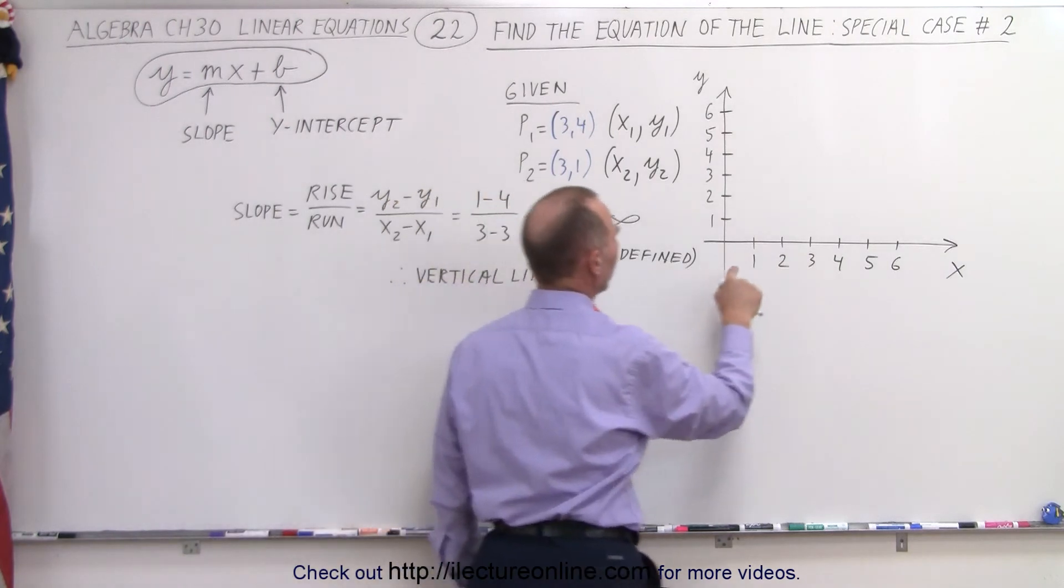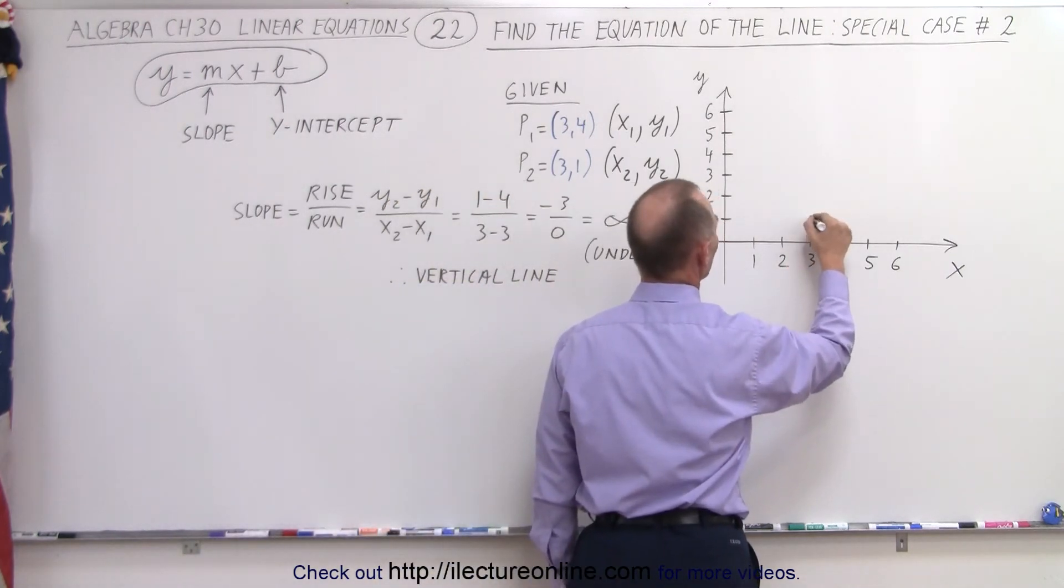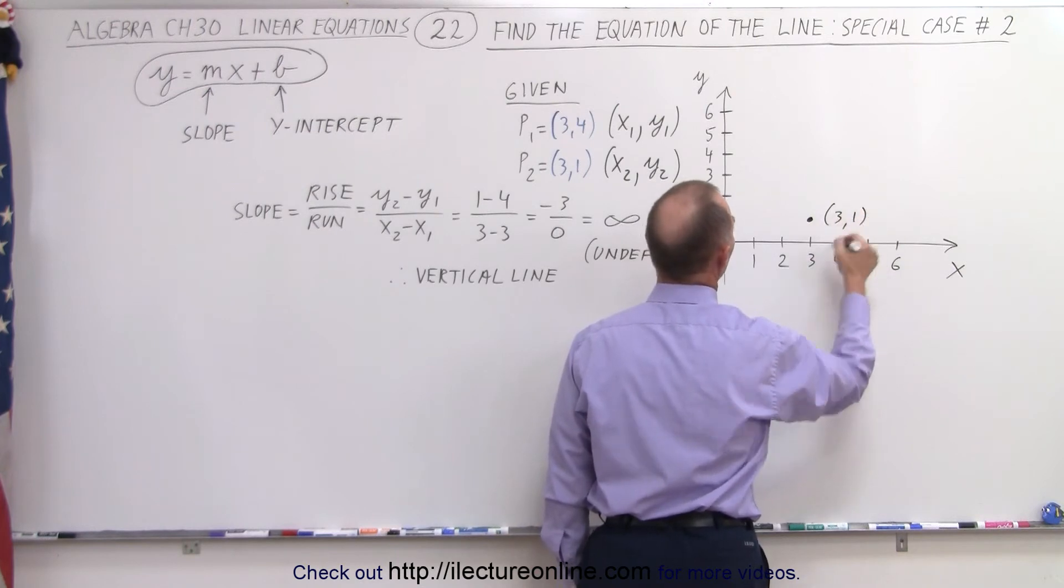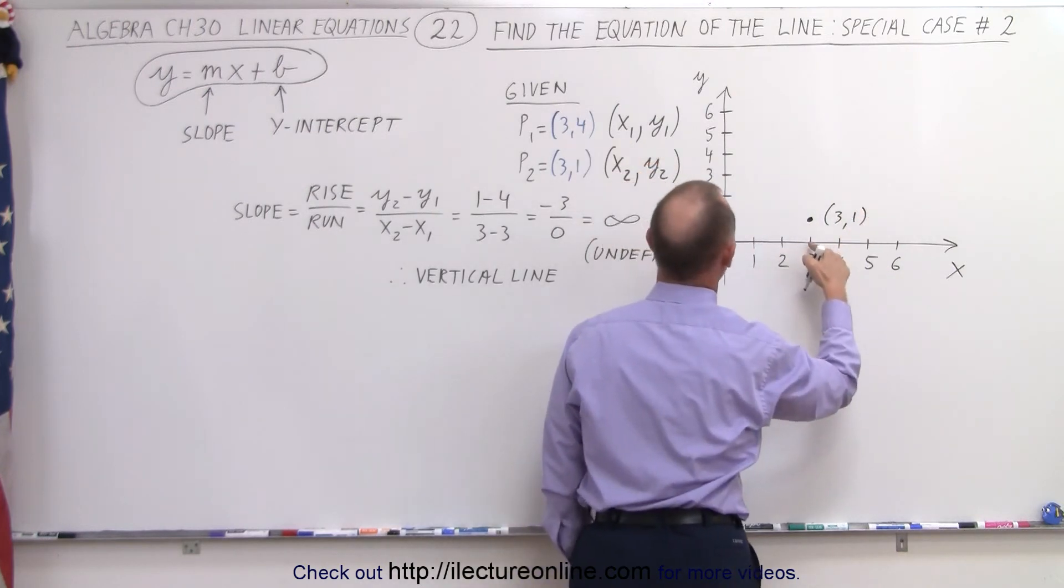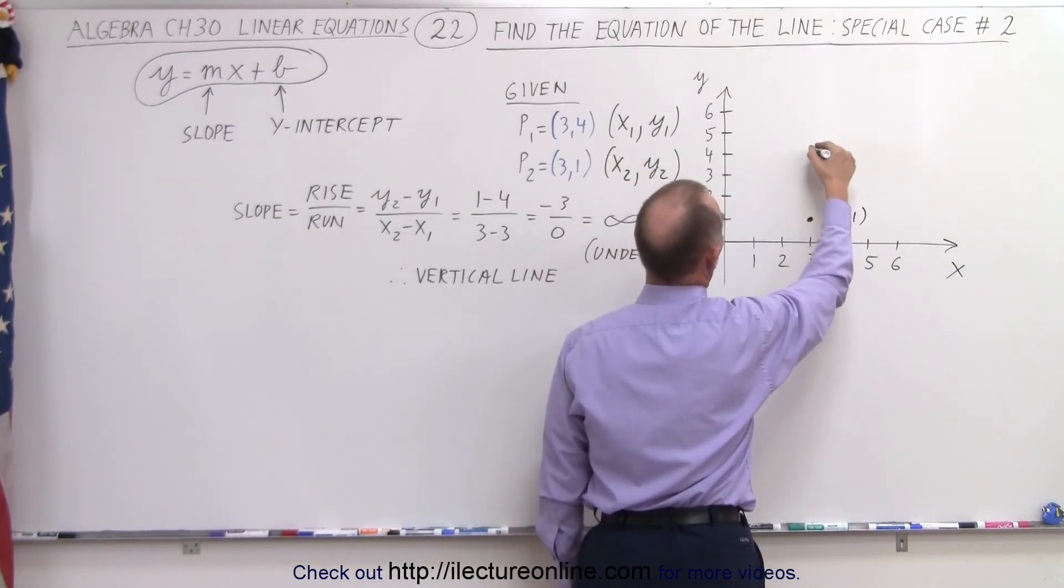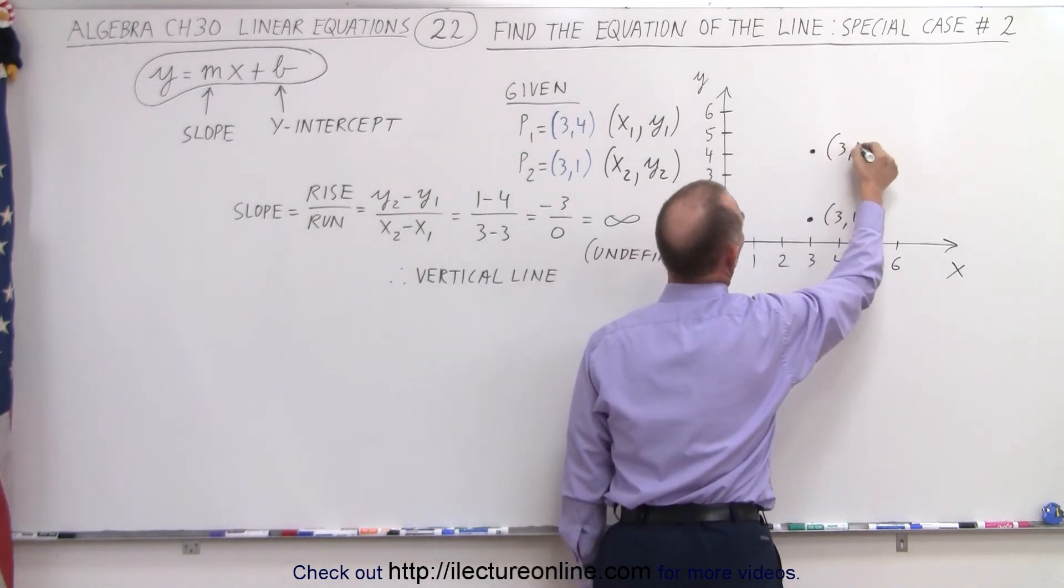The first point, 3, 1, that would be right there, so this is the point 3, 1. And the next point is 3, 4, so that would be 3 and 4, that would be up here. Let's label that point 3, 4.